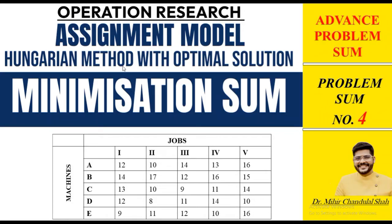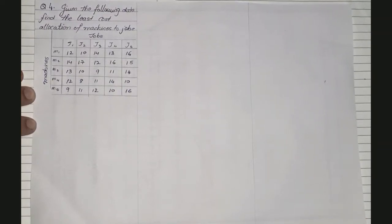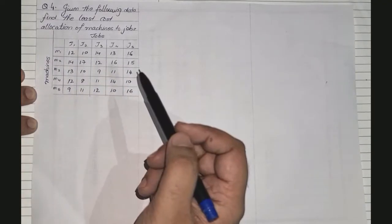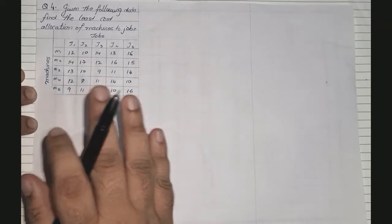Hello everyone, this is Dr. Mihir Shah, once again with another video. In this video we are going to learn how to solve advanced problems on minimization problems under the chapter assignment model using the Hungarian method. This is our fourth problem in the video series. The question states: given the following data, find the least cost allocation of machines to jobs. First, always check whether the sum is balanced or unbalanced — there are five jobs and five machines, so it is a balanced question.